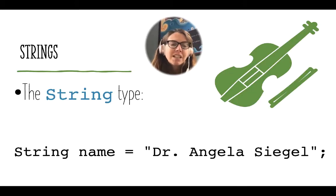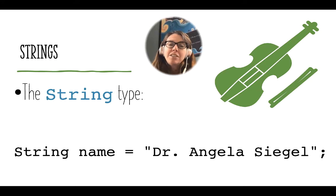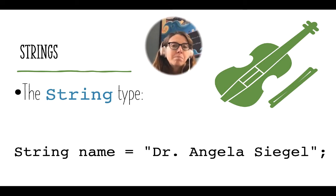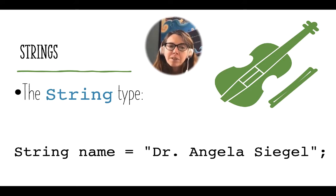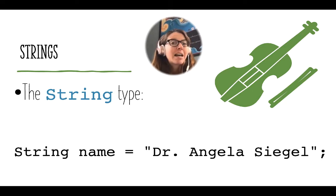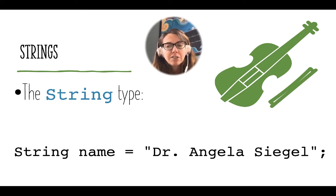The string type is exactly what you'd expect. When we declare a string variable we do it basically the same way as with integers and floating point types — we give the data type, String, but we have to note that the S in String is capitalized. Then we give the variable name; in this case I've given the variable name 'name', and then we assign the initial value — in this case 'Dr. Angela Siegel'. That value is held in 'name' as a sequence of characters: D, then a lowercase r, then the period.